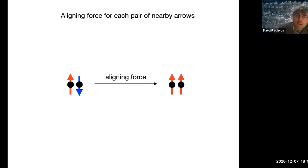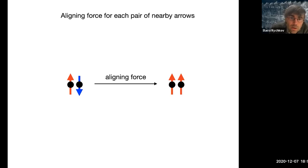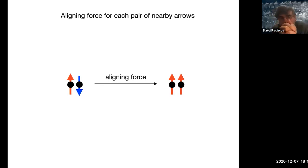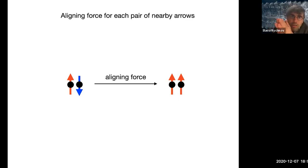If you look at two arrows which are right next to each other, it turns out that if these arrows are misaligned — if they point in opposite directions — then there is an aligning force which tries to align them in the same direction. If you've ever held little bar magnets in your hands, you certainly felt this force. So since every neighboring pair of arrows tries to be aligned, you can imagine that basically all arrows in the magnet are going to point in the same direction.